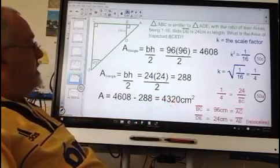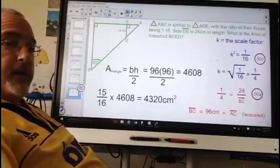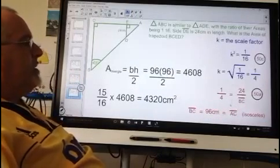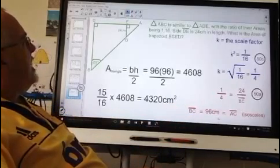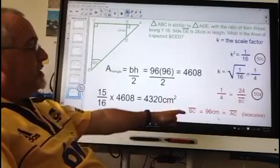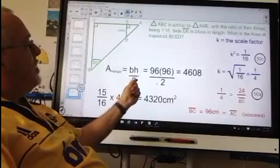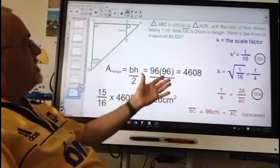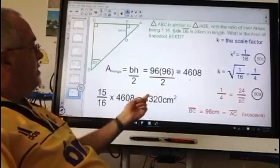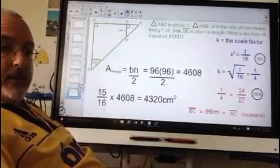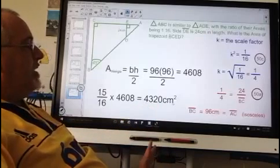A third method again involves the first two steps. The blue step and the red step are the same. Except that I did not have to bother pointing out that side AE is 24 cm in this case. Because I don't have to use it using this method. Again I use the area of a triangle formula to find the area of the larger triangle ABC. And I get 4,608. But then I can simply multiply that by the scale factor, 15 over 16. And we get 4,320. Same answer, of course, and apply the unit of measure.